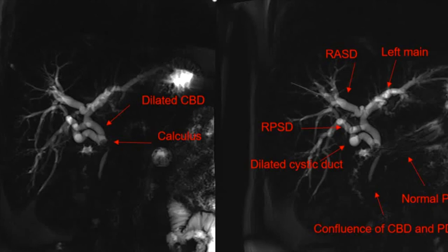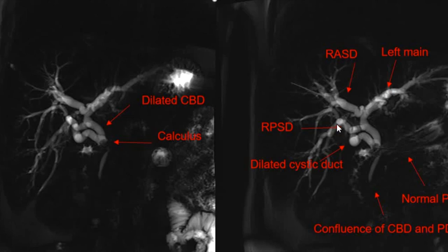Thick slab T2-weighted MRCP images in a post-cholecystectomy patient show a calculus at the junction of the cystic duct remnant and common bile duct, causing significant upstream dilatation of the common bile duct, the cystic duct remnant, and intrahepatic biliary radicals. In addition, there is variant anatomy of the biliary tree with the right posterior sectoral trunk draining directly into the common hepatic duct. Mentioning this variant anatomy is important to guide therapeutic procedures.